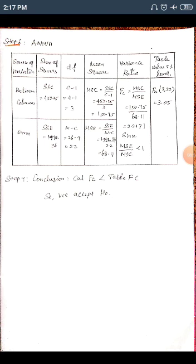Step 7 — Conclusion: The calculated F value is 2.21 and the table value is 3.05. Since the table value (3.05) is greater than the calculated value (2.21), we accept H₀. Conclusion: there is no significant difference between the four brands of electric lamps.